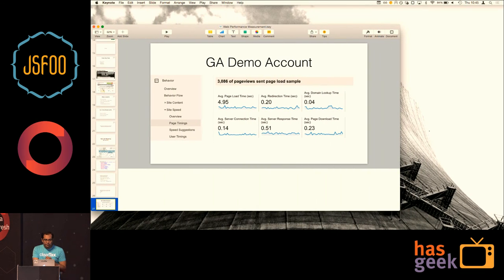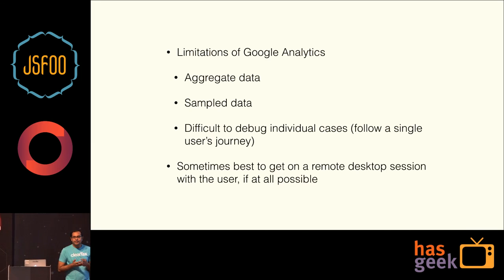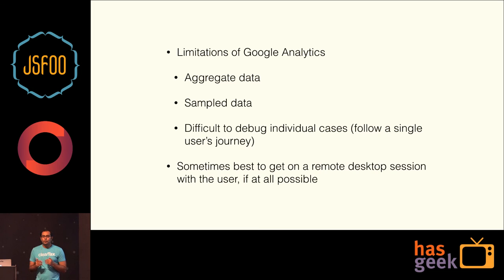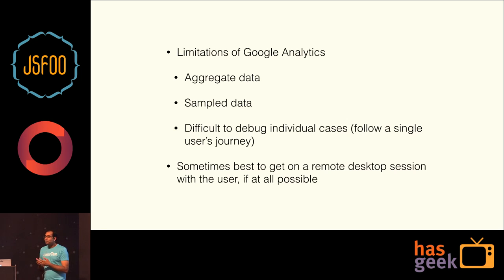That was a very quick demo of what GA does. You have to be aware that Google Analytics is very powerful but also limited in some ways. One of the main limitations is that it gives you aggregate data — it won't give you individual data. You can't really study one specific user's performance issues. Let's say someone files a support ticket saying it's not working for them — you can't drill down into that in Google Analytics. Also, up to a certain level it will give you data, but even if you put the sampling rate at 100%, after a threshold it will start sampling and give you limited metrics. Sometimes if you actually have to troubleshoot a problem, it makes sense to do a remote desktop session with the user or, if they're technically savvy, ask them to share an HAR file with you.